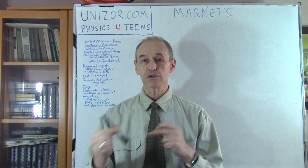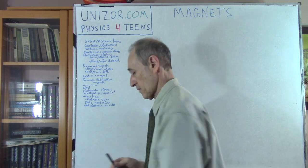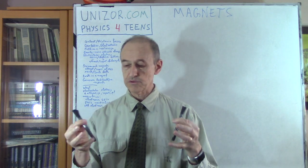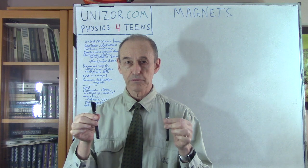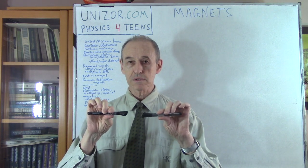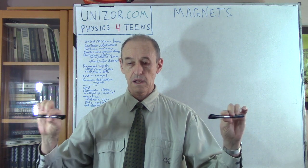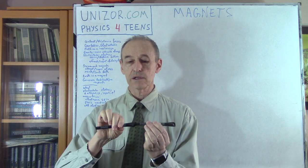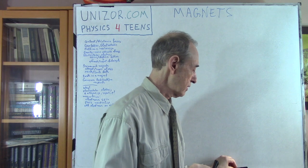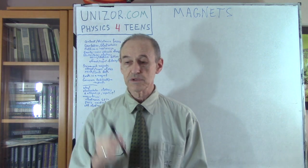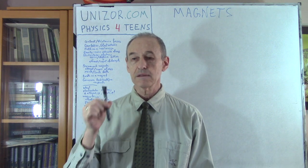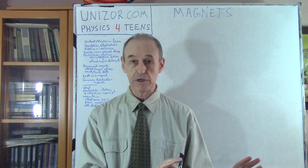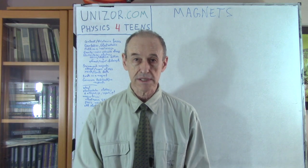As far as attraction and repulsion: similar poles are repelling and different poles — like North to South or South to North — are attracting each other. So again, there is some similarity and differences. What's important with permanent magnets is that the North and South poles exist on each object. This is one of the things that differentiates them from electrostatic forces.